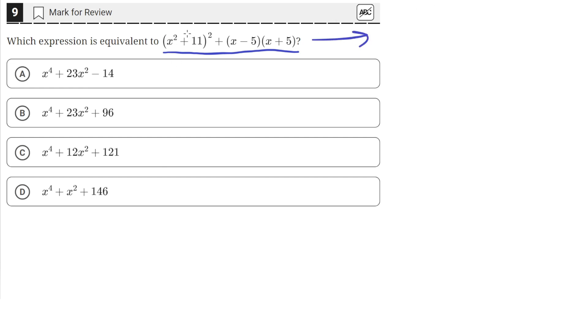So the first thing we can do is rewrite this as the product of two terms, since this quantity here, x squared plus 11, is being squared, so that's just x squared plus 11 times x squared plus 11.